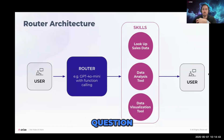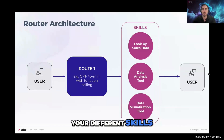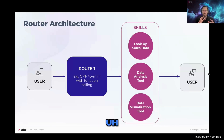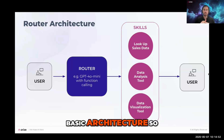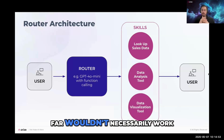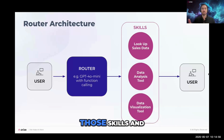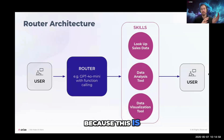This is very simple and straightforward if you don't need to take multiple actions to answer the user's question and each of your skills is self-contained. However, this basic architecture wouldn't work if you needed to take the output of one skill and feed it back into your system, because this flow is purely linear.